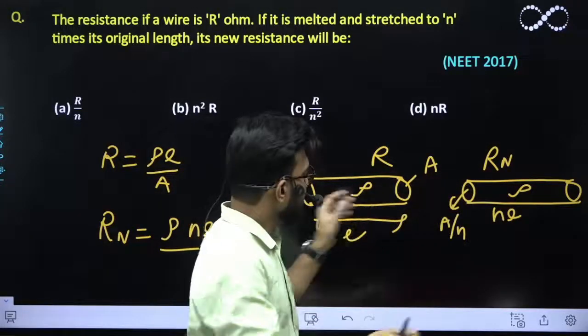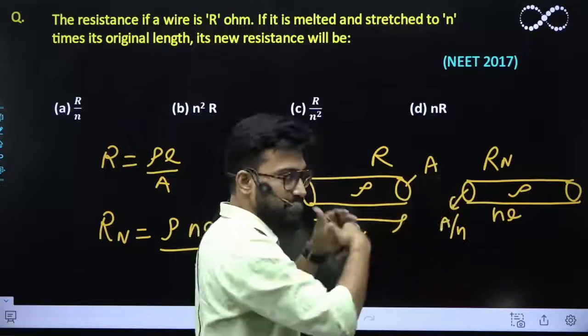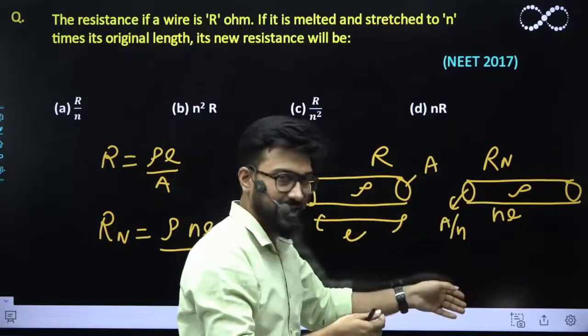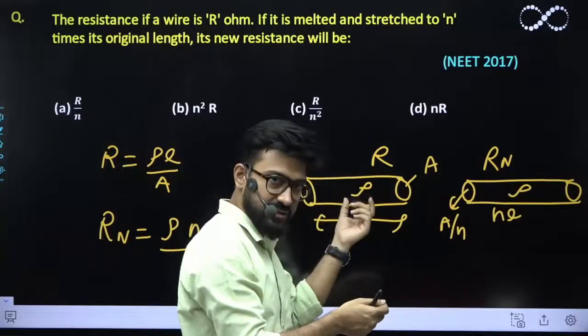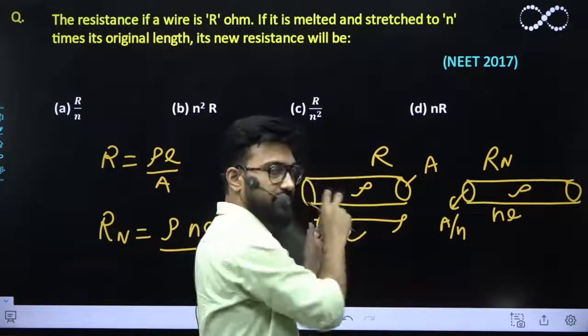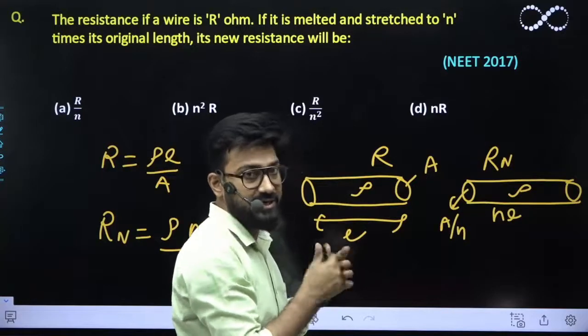Obviously if it is stretched, its area of cross section also reduces. If it is stretched to n times, then the area would be reduced by 1/n times. If it is flattened and its length reduces, then its area increases—that you should remember.